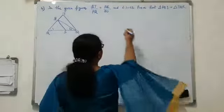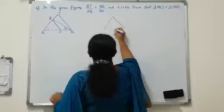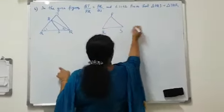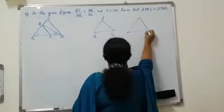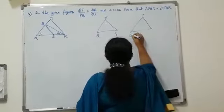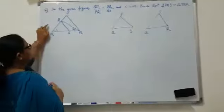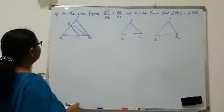So first we draw the triangle PQS and triangle TQR. We have to prove that these two triangles are similar. So let us see the conditions given.